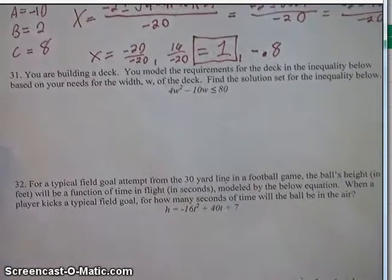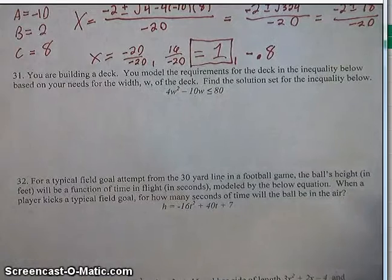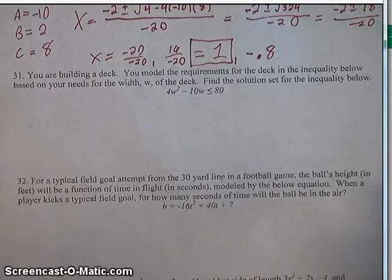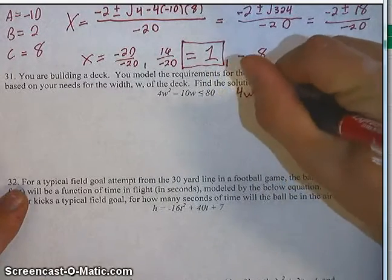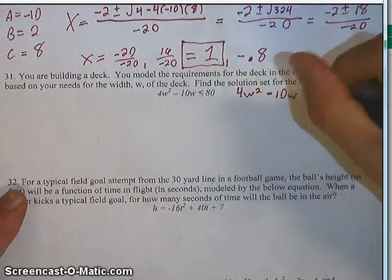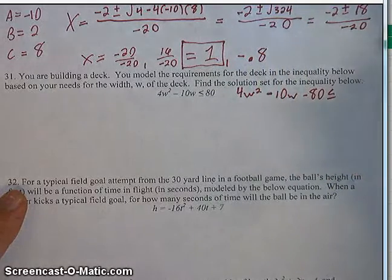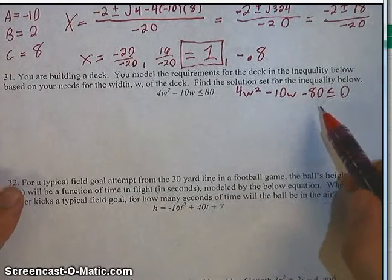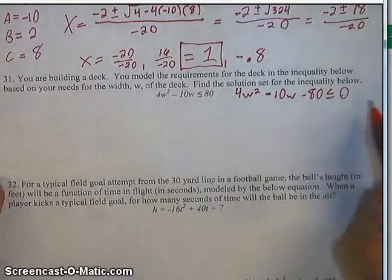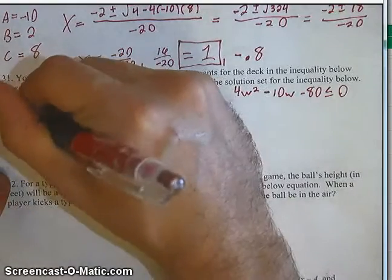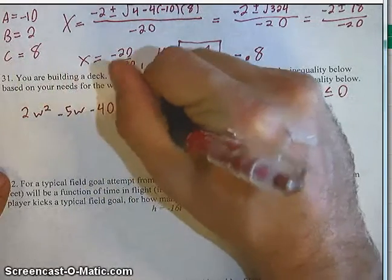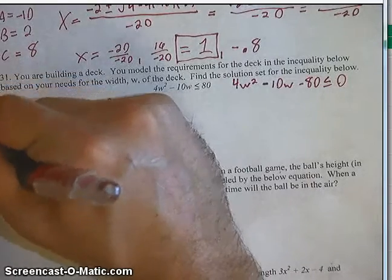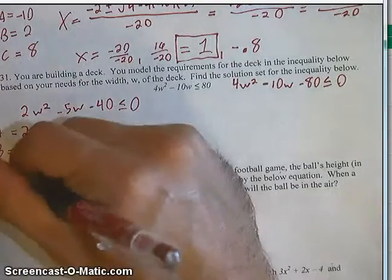Let's go on to 31. You're building a deck and you model the requirements for the deck in the inequality below, based on your needs for the width w of the deck. Find the solution set for the inequality. To find the solution set, we first set this equal to 0: 4w squared minus 10w minus 80 is less than or equal to 0. I'm going to divide all of this by 2 to make it easier, giving me 2w squared minus 5w minus 40 is less than or equal to 0. So: a equals 2, b equals negative 5, c equals negative 40.